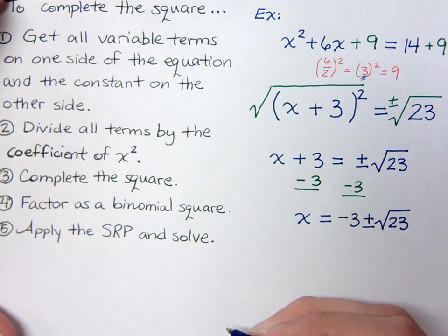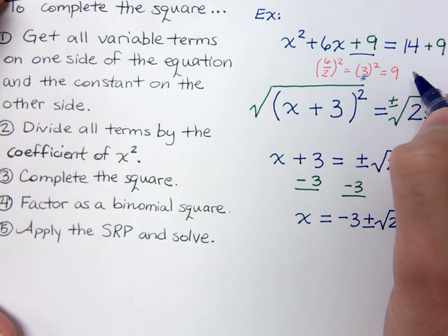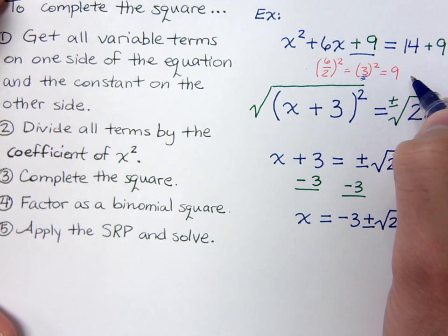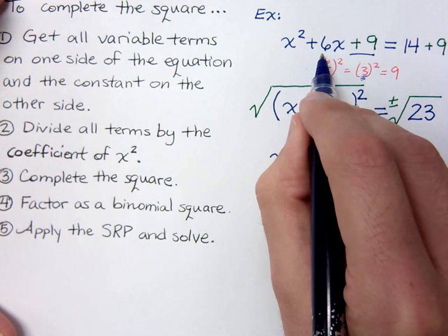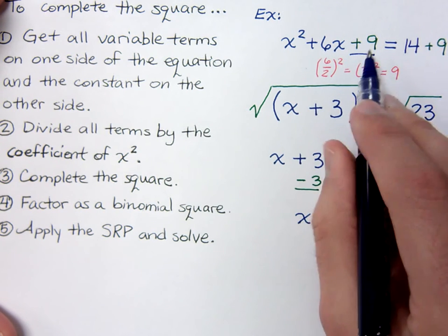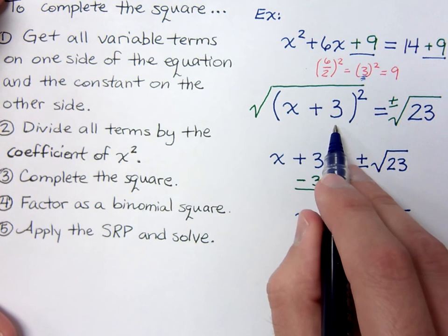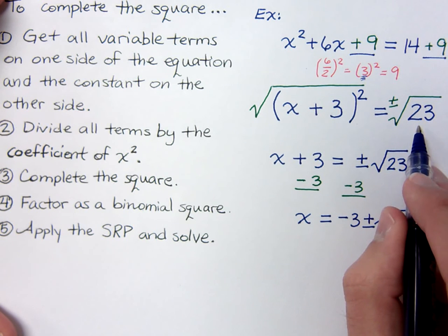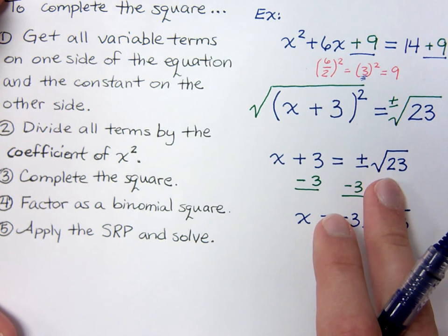Now we have x equals negative three plus or minus the square root of twenty-three. The way the original problem was written, the gap was a clue to complete the square. Another helpful sign is that this is already a positive one x squared and the middle coefficient is even, making dividing by two straightforward. We add nine to both sides, factor the left side, combine like terms on the right, and apply the square root property.